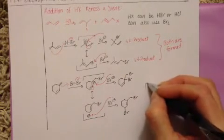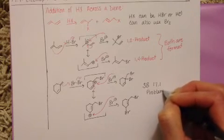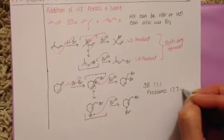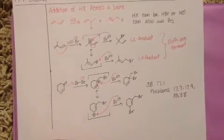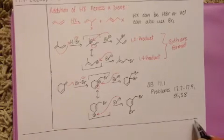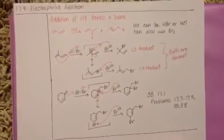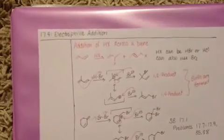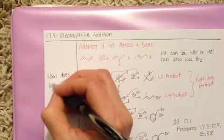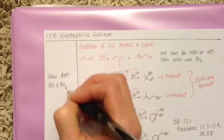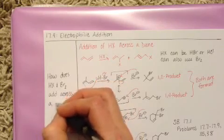Practice drawing these reactions with skill builder 17.1 and problems 17.7 through 17.9, 17.35 and 17.38. And your study question for this section is how does HX and Br2 add across a diene?